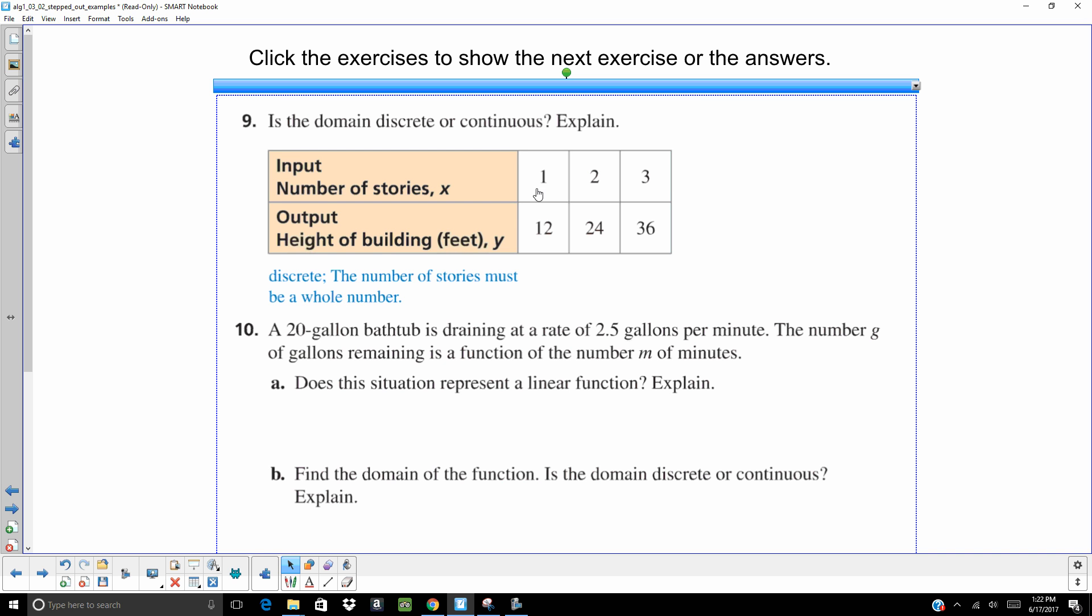This one is discrete because the number of stories must be a whole number. You can't have one and a half stories.